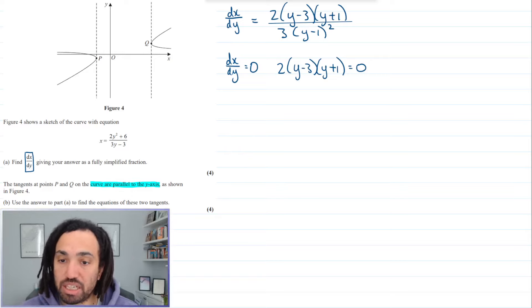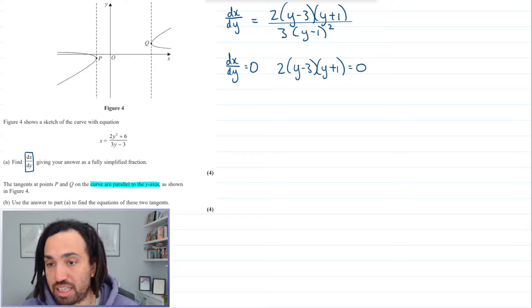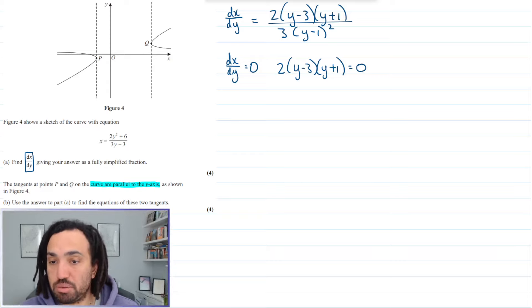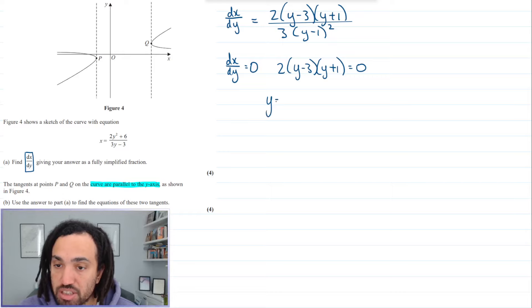But this time, we actually have the reciprocal already. We have dx by dy. So we can just set that equal to zero. So it's the numerator that we need to make sure is equal to zero. So this gives me y equals 3 and y equals minus 1.